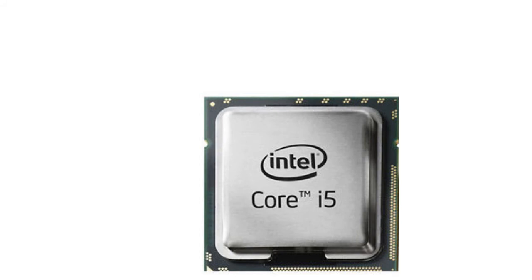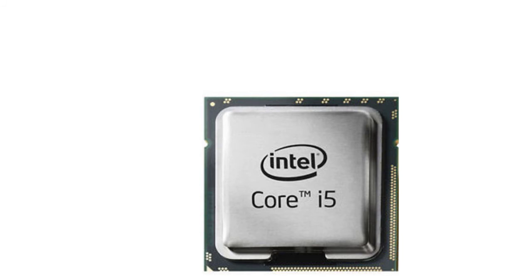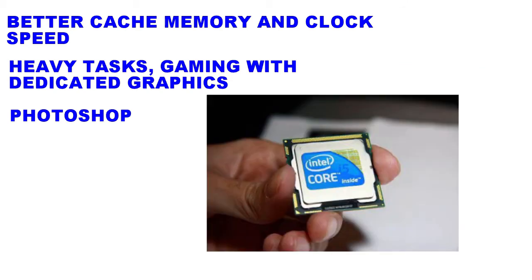i5 processors have 2 variants — one for laptop and another for desktop. The laptop variant is dual core with hyperthreading, while the desktop variant is quad core without hyperthreading. i5 processors have better cache memory and clock speed compared to i3 processors, and can be used for heavy tasks such as gaming with dedicated graphics and Photoshop.